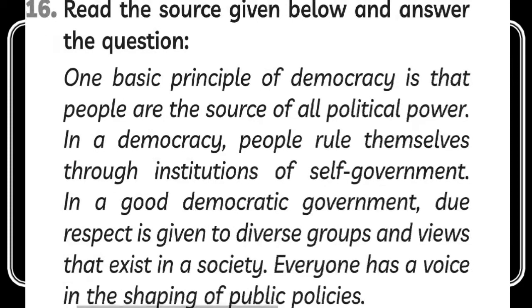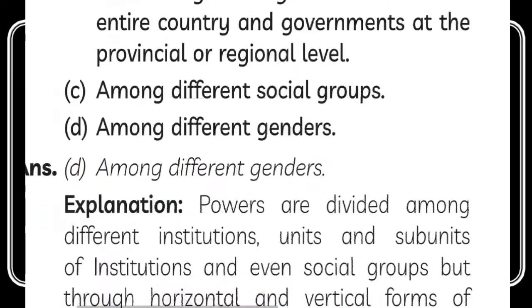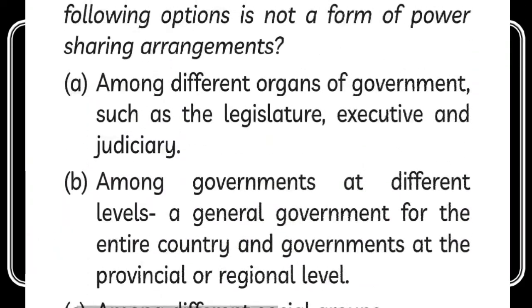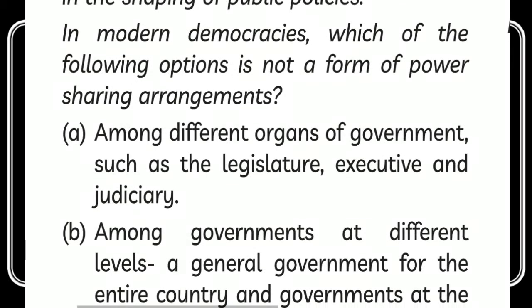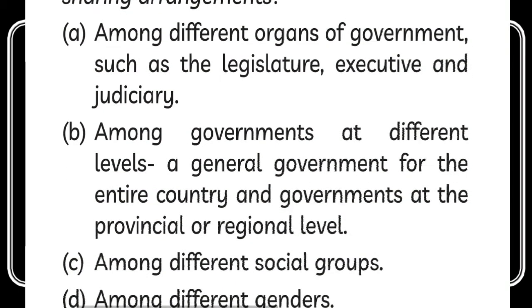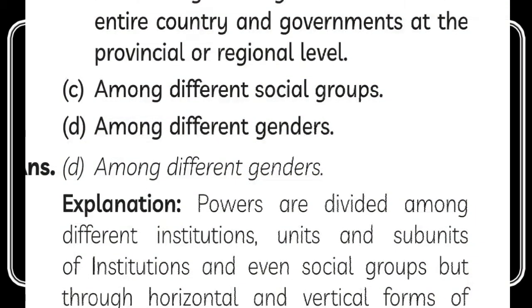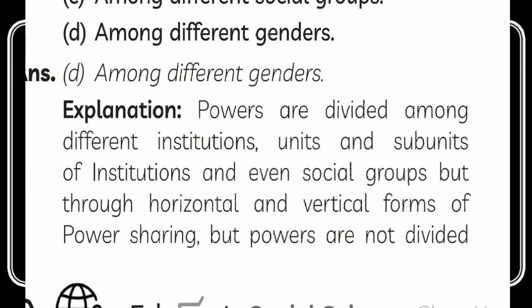Moving to a source-based question: in modern democracy, which of the following is NOT a form of power sharing? The options are: among organs of government, among levels of government, among different social groups, and among different genders. The answer is among different genders — as power is divided among different institutions, units, subunits, and social groups, but not between genders through vertical power sharing.